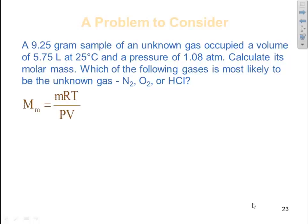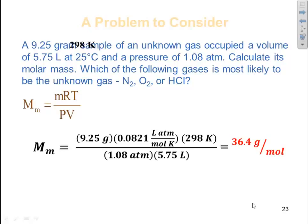So we know molar mass equals mass times R times T over PV. We plug in our mass which is given which is 9.25 grams. We know our ideal gas constant 0.0821 liter atmosphere per mole Kelvin. Our temperature we know we have to change it to Kelvin so we take our 25 degrees C and change it to 298 Kelvin. Our pressure is given to us at 1.08 atmosphere and our volume is 5.75 liters. Watch our units cancel and what's left is grams per mole which is what we're looking for. If we multiply the numbers we get 36.4 grams per mole. That's the molar mass.